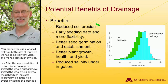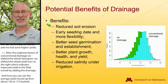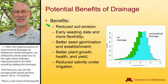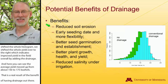We know that drainage can also reduce soil erosion. It can make our seedbed and planting dates better and earlier in the season. We can have better plant growth, yield, and health, and as mentioned, we can look at reduced salinity under irrigated conditions and drier conditions.